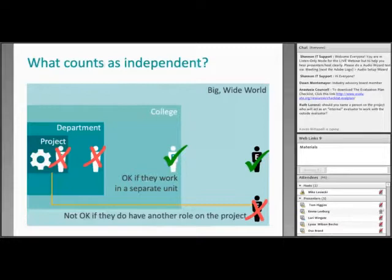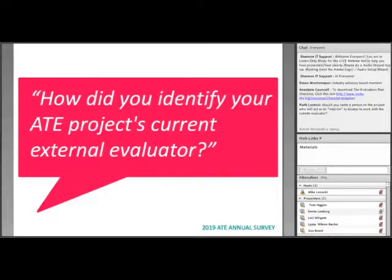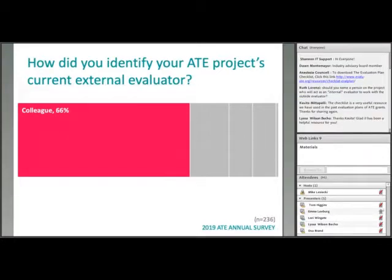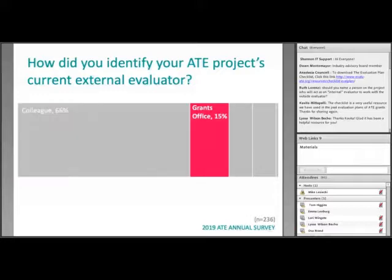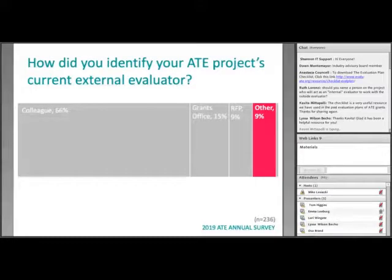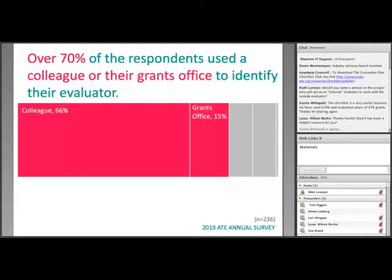How do we locate qualified independent evaluators? We asked ATE PIs on the 2019 annual ATE survey. Of 236 current ATE PIs, 66% either asked a colleague for a recommendation or selected someone they had worked with before. 15% used a grants office. 9% issued a request for quotes or proposals. Another 9% described other methods such as meeting at a conference. Less than 1% used an evaluator directory.